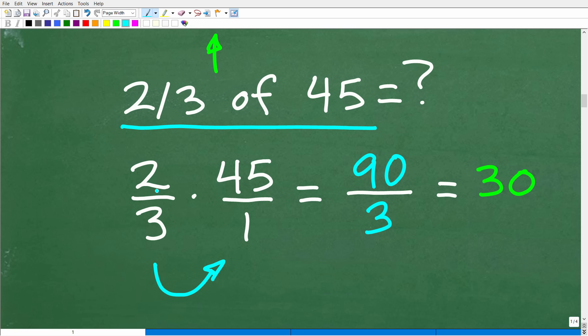Now, we're multiplying a fraction by a number. You can always think of any number as a fraction by just simply putting it over 1. So we're going to take that two-thirds and multiply it by 45 or 45 over 1. And then to multiply fractions, you simply multiply the numerators and denominators. So 2 times 45 is 90. 3 times 1 is 3. 90 divided by 3 is 30.